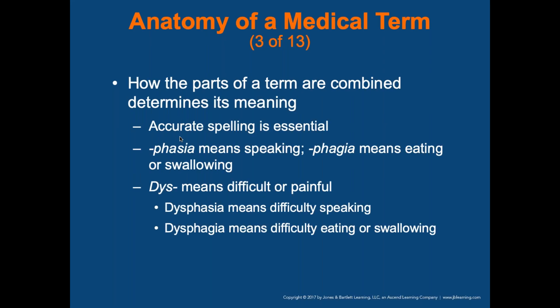How the parts of a term are combined determines its meaning. Accurate spelling is essential because one letter could change a word to something completely different, and this is huge when we start talking about medications.